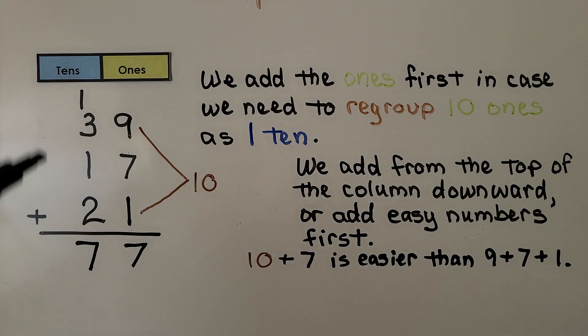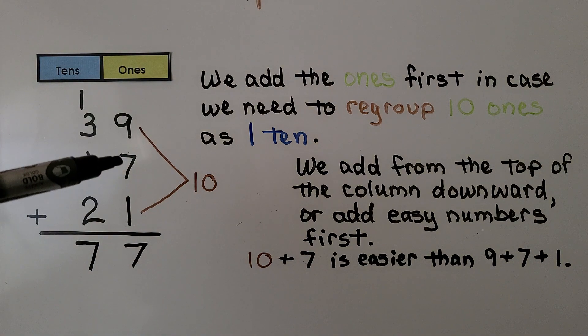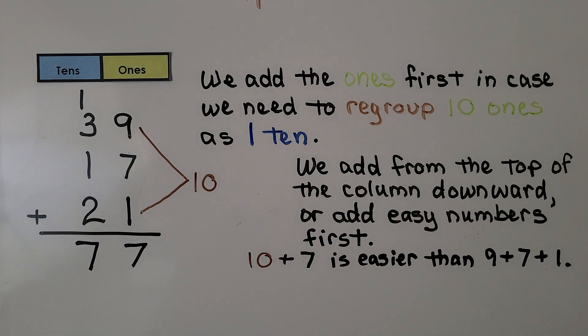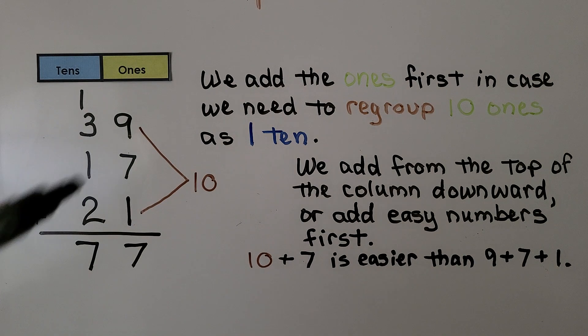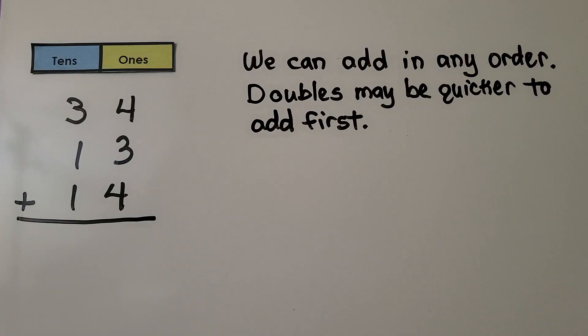We can add from the top of the column down. We could have added 9 plus 7, which is equal to 16, and one more is 17. But 10 plus 7 is easier than 9 plus 7 plus 1.